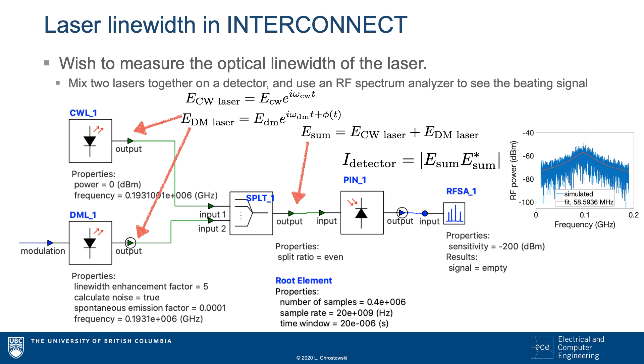These two lasers are added together using a splitter. The electric fields are added, and the detector takes the square of the electric fields to get a power.